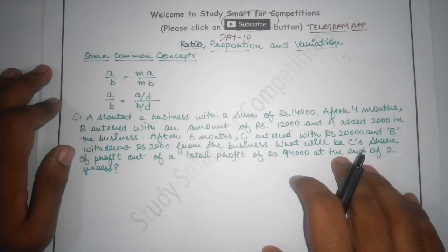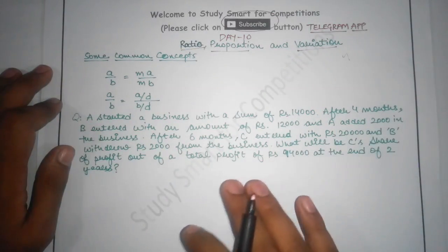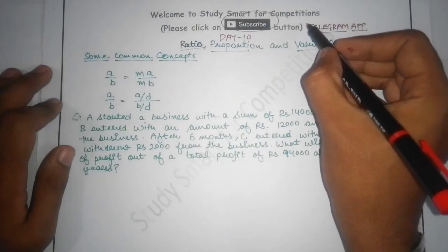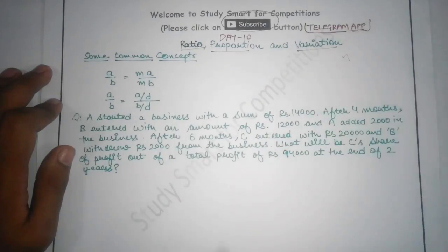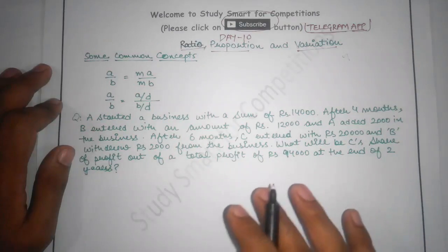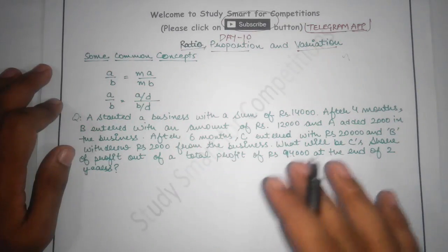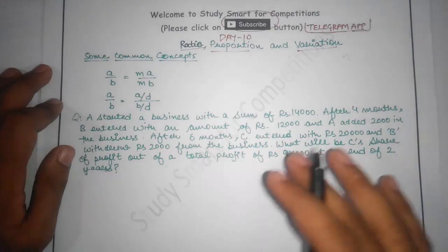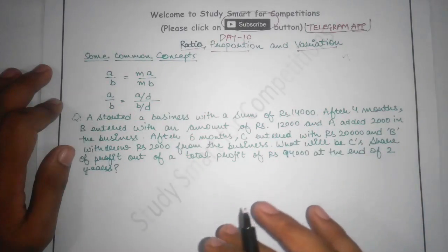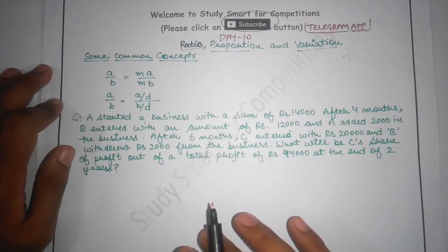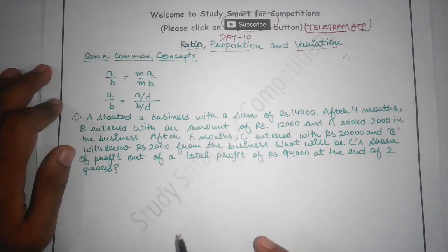Along with that, all the material PDFs and videos will be available on the Telegram app also. How to join the Telegram app and all that information is available in our video on how to join Telegram — you can find it by navigating to our channel Study Smart for Competitions. And now we will start with our topic ratio, proportion and variations.